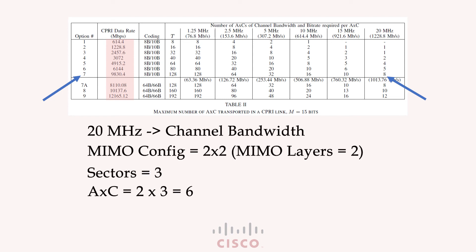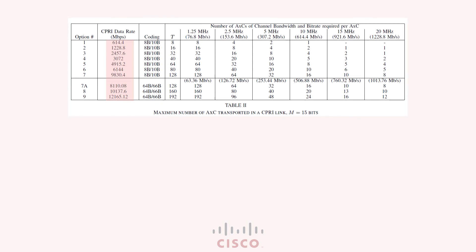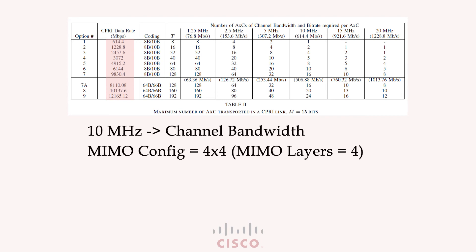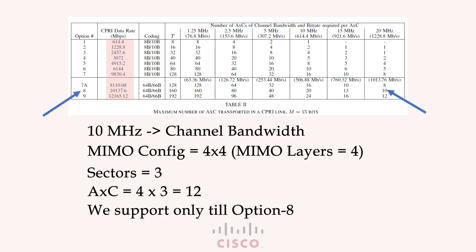Let's pick an example of 10 megahertz of channel bandwidth and a 4x4 MIMO antenna configuration over three sectors. The number of AxCs that need to be allocated in this case is 12, and from the table the minimum CPRI rate required to support this configuration is option 3.